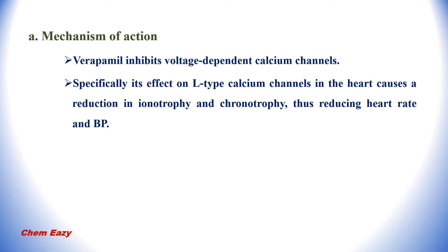This is the mechanism of action of verapamil. This drug inhibits voltage-dependent calcium channels. Specifically, its effect on L-type calcium channels in the heart causes a reduction in inotropy and chronotropy. Due to this reduction, it reduces the heart rate and blood pressure.